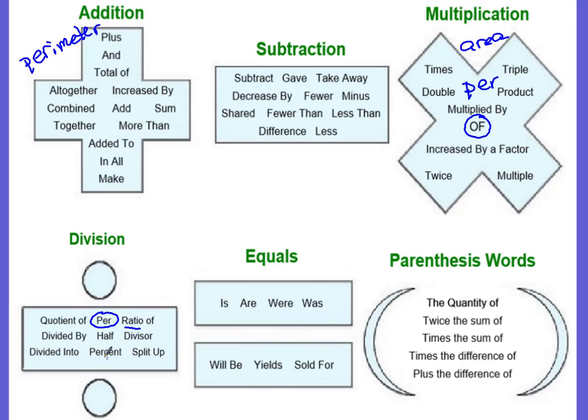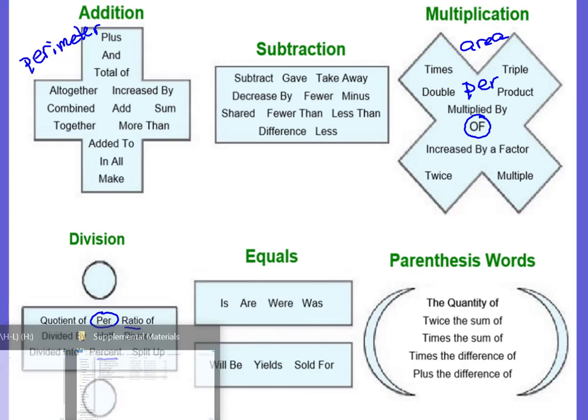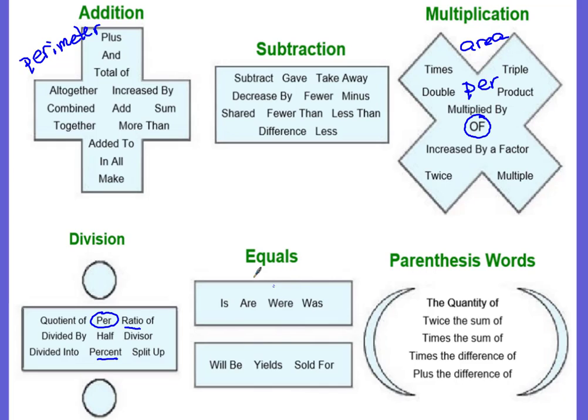Then we have two new categories. The first one is equals, and this is going to become really important when we get into our equation section. These are words that mean equal: is, are, were, was, sold for, yields, will be - all of these are clue words that represent equal.